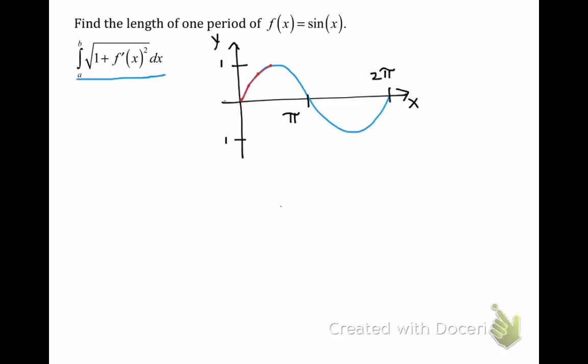You can check your textbook to see how we can transform the length of a typical line segment into the square root of 1 plus f prime of x squared delta x. Using the limit as the number of line segments approaches infinity results in this definite integral that calculates the exact arc length of f of x on the interval from x equals a to x equals b.